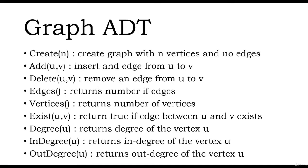The operations degree, in-degree, and out-degree will return integer values, whereas the operation exist will return a boolean value, true or false. The operations edges and vertices will return integer values, the number of edges or number of vertices. The operations add and delete take arguments as the vertices, that is the two endpoints u and v.